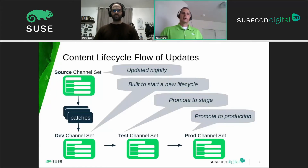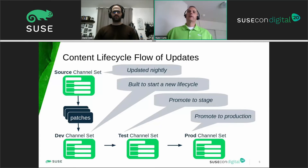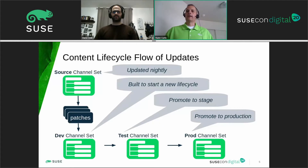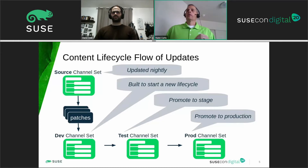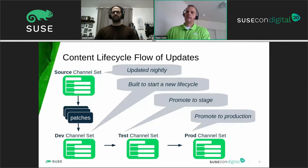Conceptually, we have a source channel that gets updated nightly. Those patches can be controlled and promoted into a sandbox or dev environment — our most unstable environment — where we can continually promote as needed. Only when we're ready, we promote from dev into test for testing or user acceptance, then into pre-production, and only when things are certified and ready do we promote into our production channel set. This gives us sequential promotion of updates from one environment to the next, as needed.